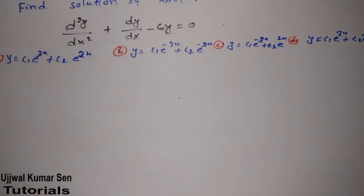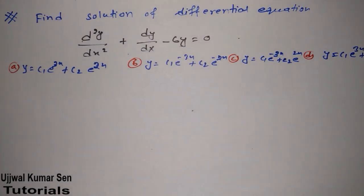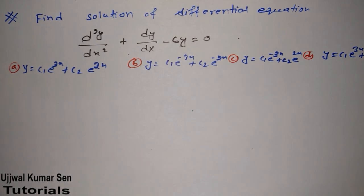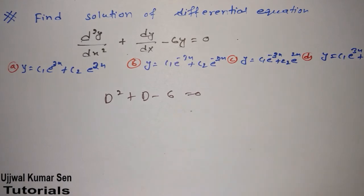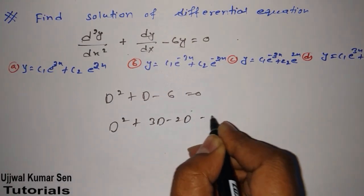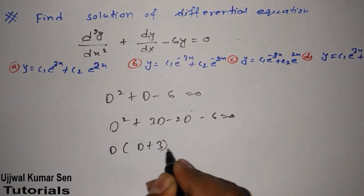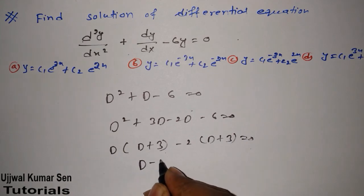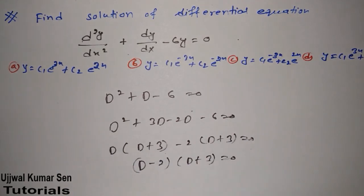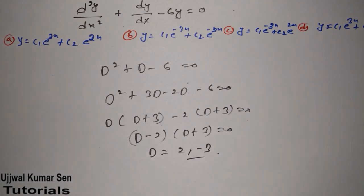Now let's go to another question in the same case. The question asks to find the solution of a differential equation. We convert it to auxiliary equation form: d² + d minus 6 equals 0. Factorizing: d² + 3d minus 2d minus 6 equals 0, taking d as common: d(d + 3) minus 2(d + 3) equals 0, giving (d minus 2)(d + 3) equals 0. So values of d are 2 and minus 3.